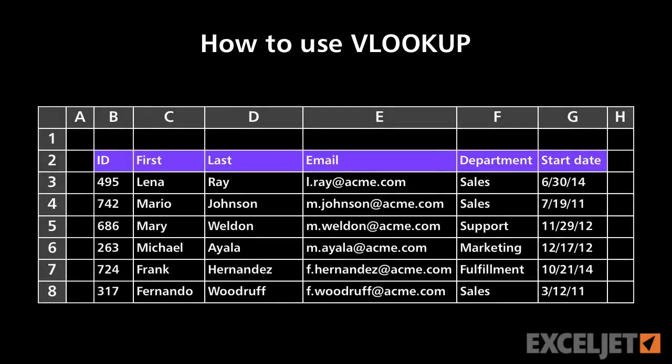VLOOKUP is one of the most important lookup functions in Excel. The V stands for vertical, which means you can use VLOOKUP to look up values in a table that's arranged vertically. Let's take a look.